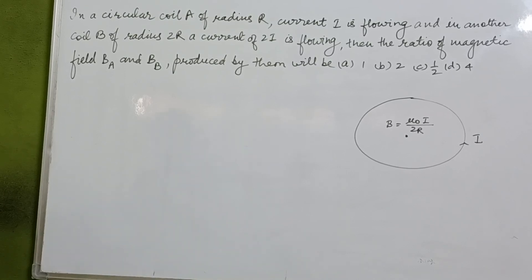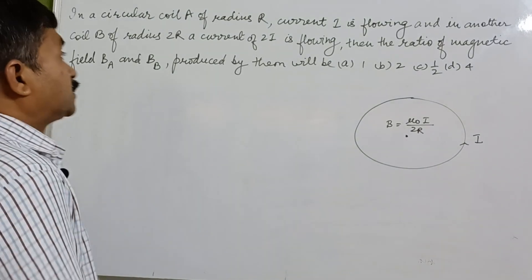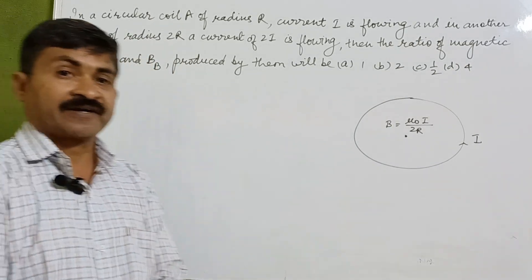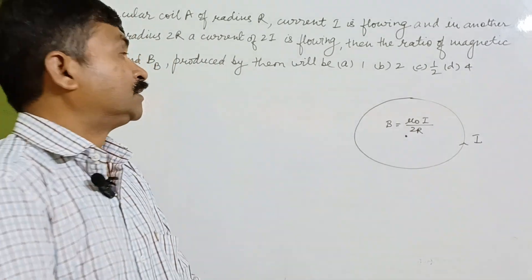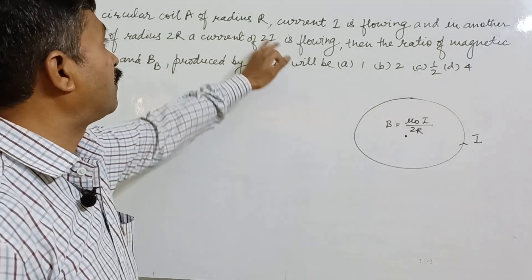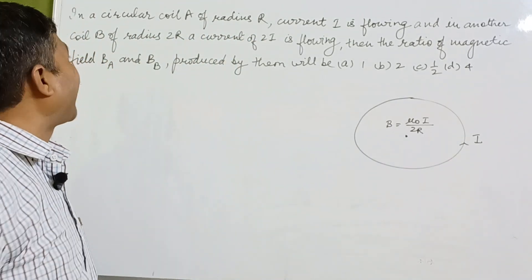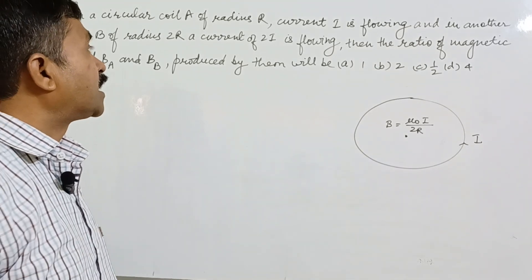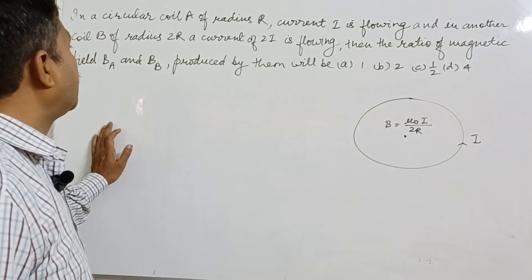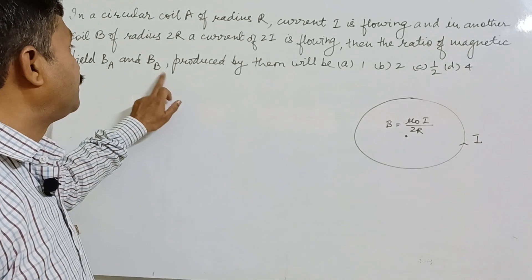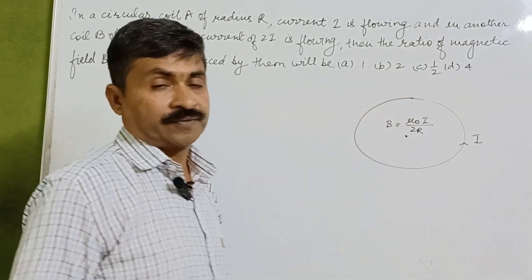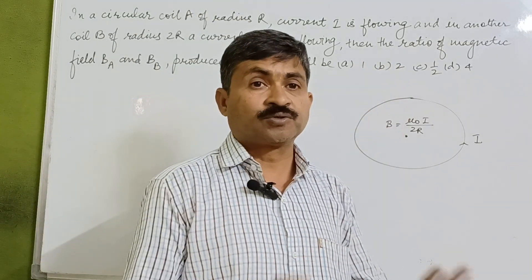Today we will see an MCQ question based on the magnetic effect of electric current. In a circular coil A of radius r, current i is flowing, and in another coil B of radius 2r, a current of 2i is flowing. The ratio of magnetic field Ba and Bb will be given by the options: 1, 2, 1/2, and 4.